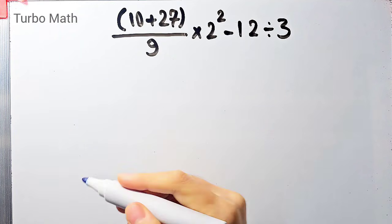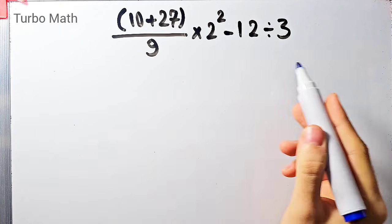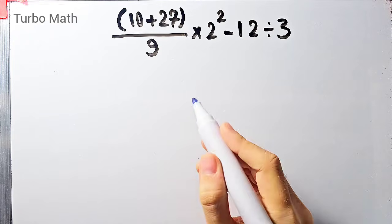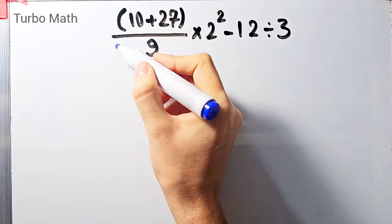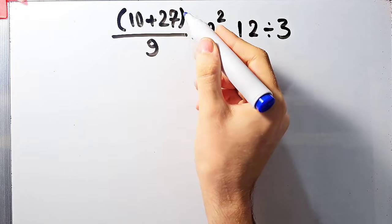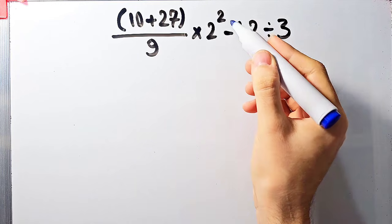Hi friends, welcome to Turbo Math channel. Many people when they see this question don't know which operation to do first, so they often make a mistake. Open parentheses 10 plus 27, close parentheses, then over 9, times 2 to the power of 2, minus 12 divided by 3. What is the answer to this question? Can you solve it?